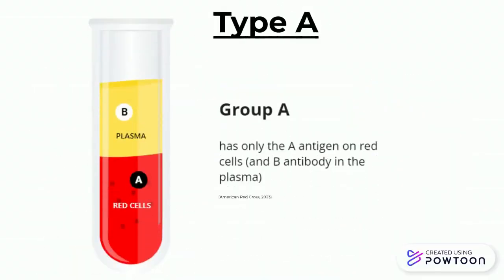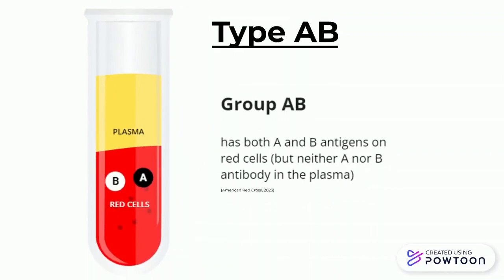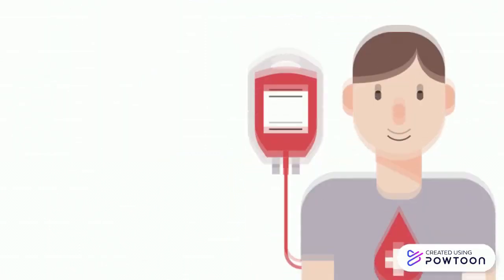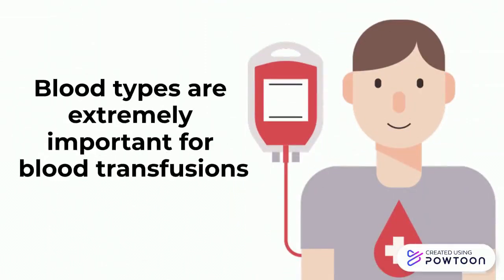A person can be blood type A, in which they only have the A antigen on their red blood cells; blood type B, only containing the B antigen; type AB, possessing both types of antigens; and type O, in which they have neither A nor B antigens on their red blood cells, but both are found in the plasma instead. Blood types are most important during transfusions as blood must be matched to the patient's type — we'll explain this more later.